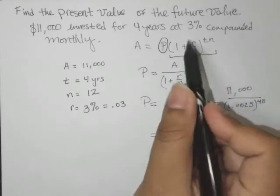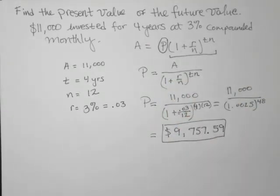So pretty easy and simple example. The key here really is just in manipulating the formula, but definitely a great example of how to find the present value given a future value. Thank you.